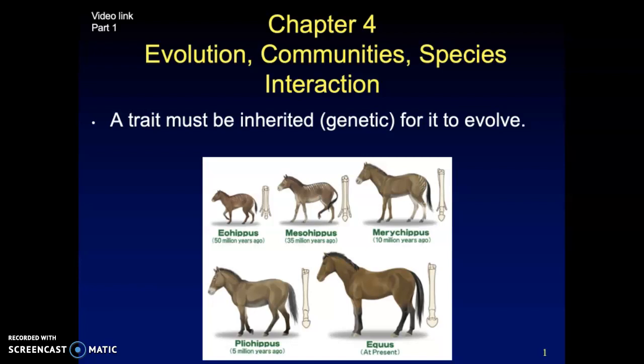How does evolution influence communities? How do communities influence species interaction? Something to keep in mind: in order for a species to evolve, the trait you're looking at must be inherited — it's got to be in the DNA passed from generation to generation. Individuals do not evolve. Individuals can adapt, but evolution happens over time.